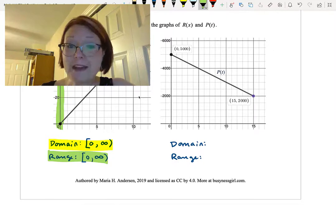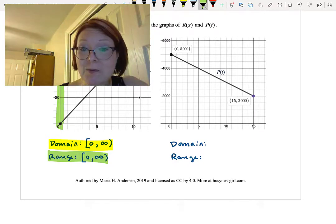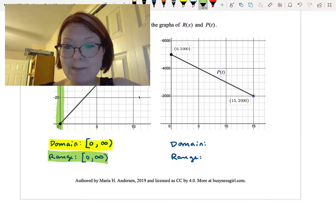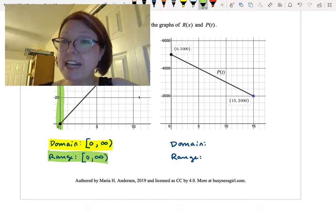The graph of p of t starts at the point 0 comma 5000 with a well-defined endpoint and ends at the point 15 comma 2000 with a well-defined endpoint and a line segment in between.